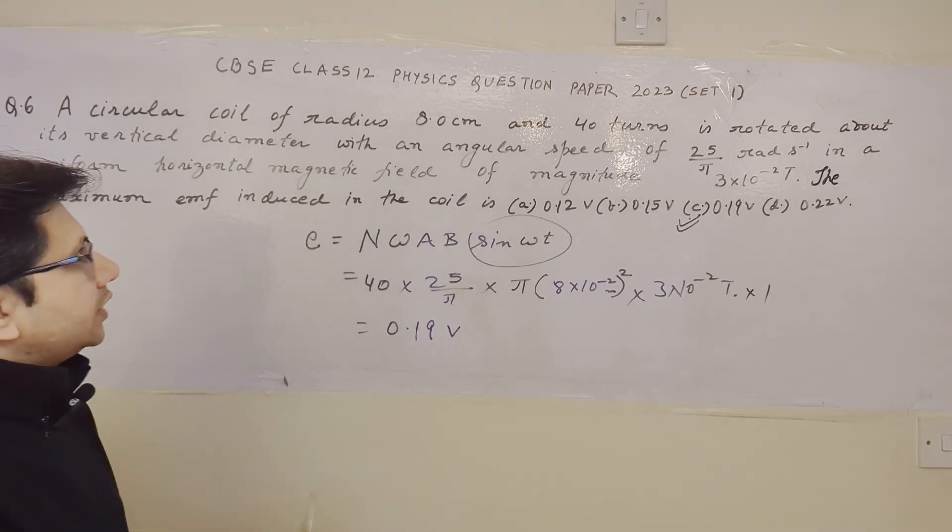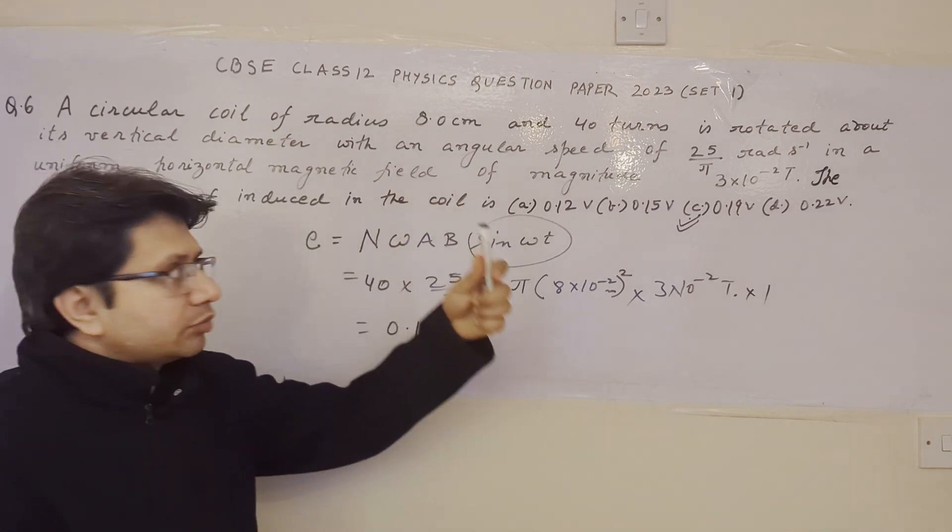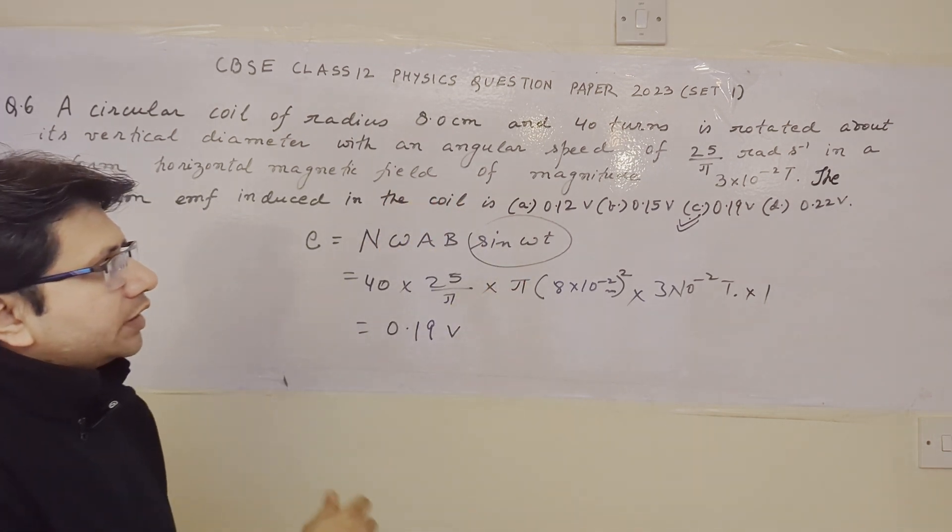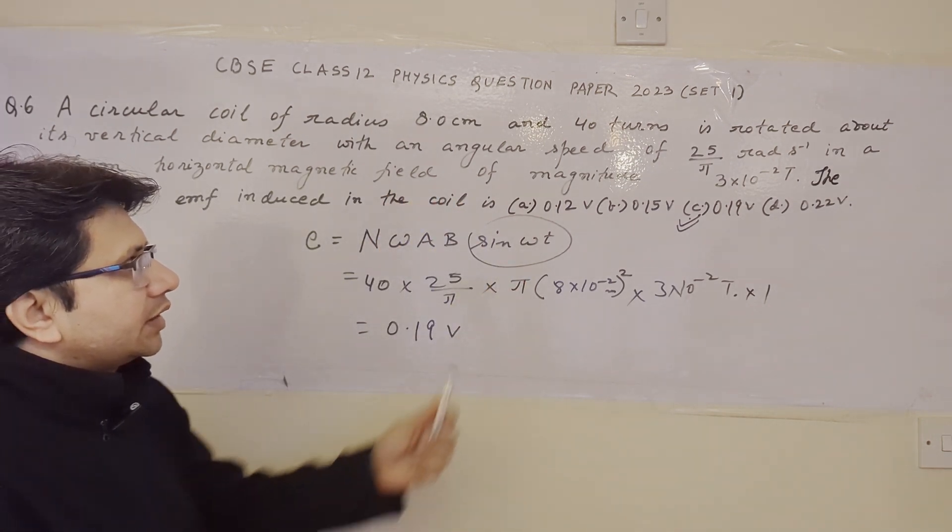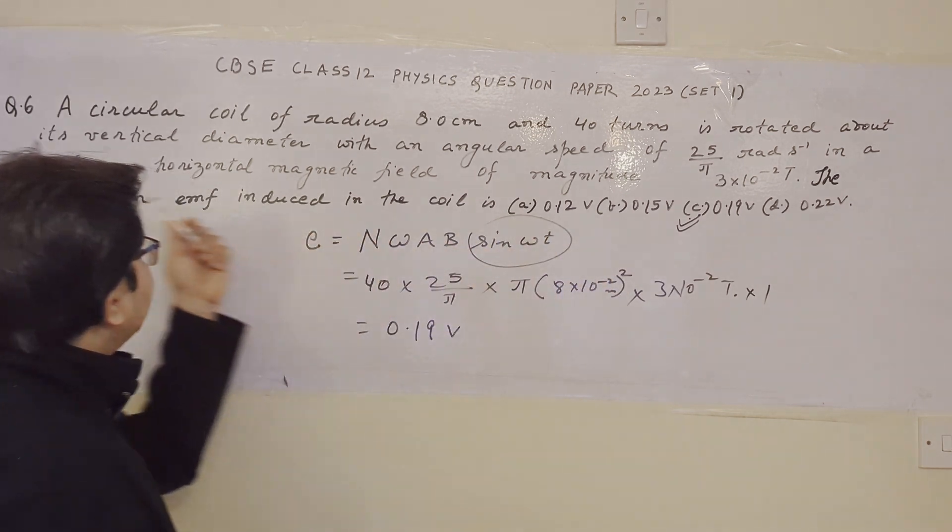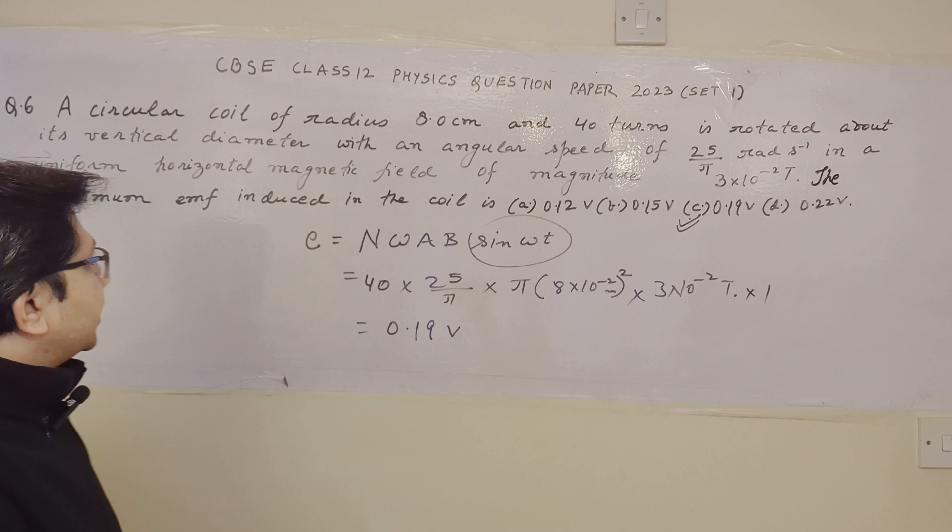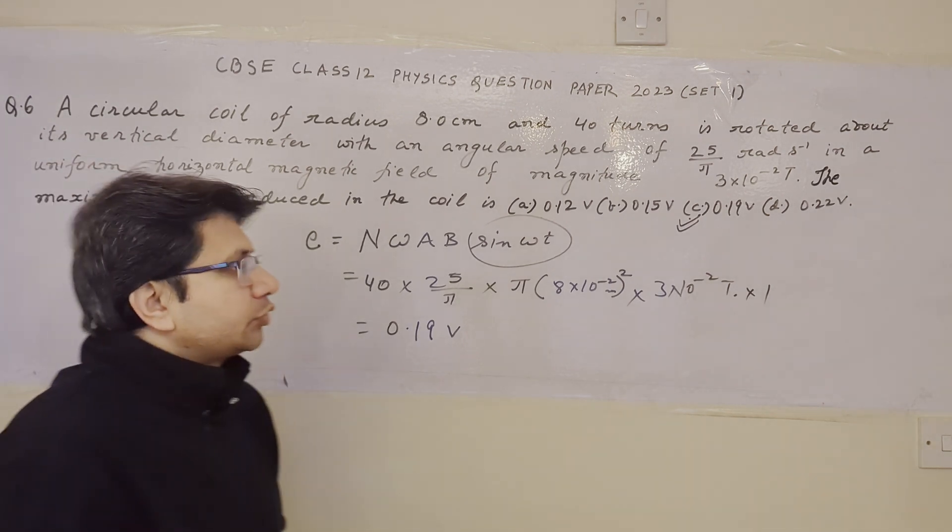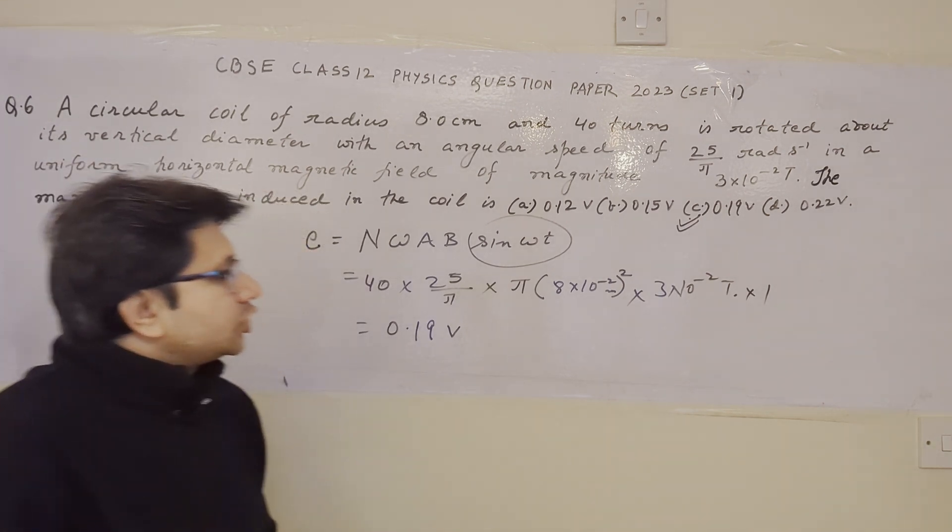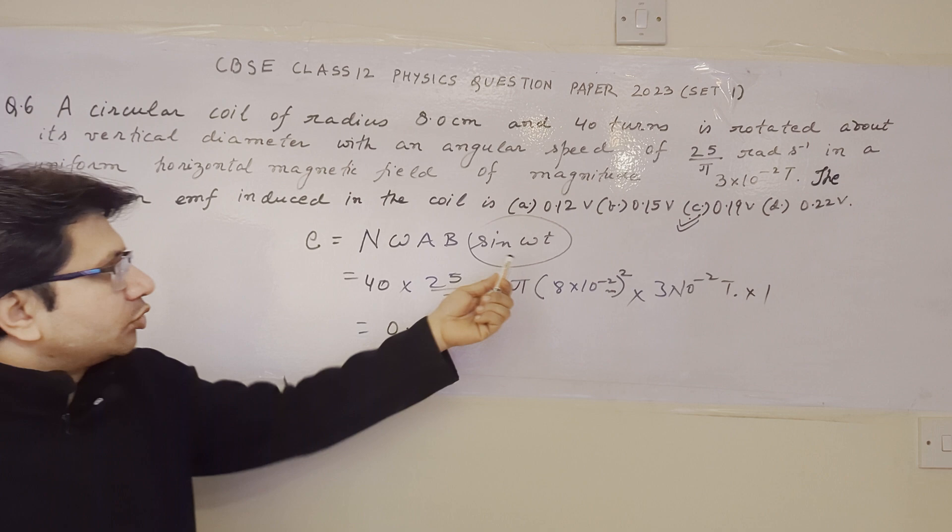So this problem में, हमें एक coil दी गई है. इसके radius दे रखी है. इसके number of turns दे रखी है. इसको vertical diameter के around जो है rotate किया गया है और यह पूछा गया है कि इसके अंदर maximum induced EMF कितना होगा. So maximum induced EMF निकालने के लिए, हम यह particular formula use करेंगे.